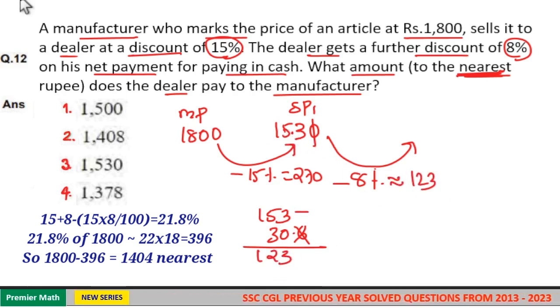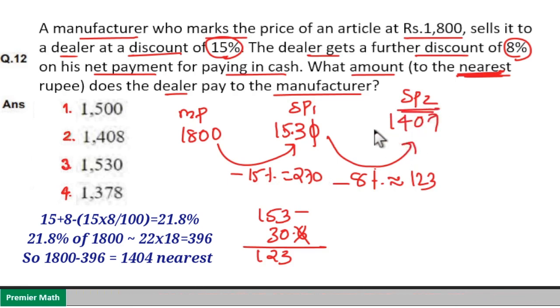So 1530 minus 123... 530 minus 100 equals 430, 430 minus 20 is 410, 410 minus 3 equals 407. So 1407 is the selling price. So 1407, option 2, is your answer.